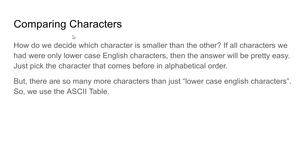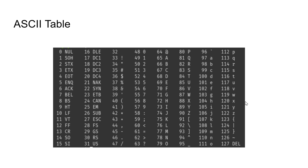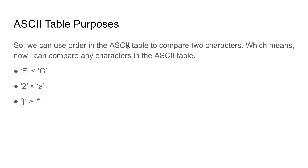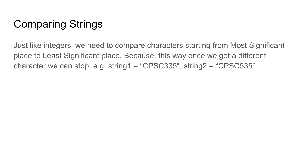Comparing characters: how do we decide which characters are smaller than the other? If all characters we know are lowercase, then we pick the character that comes before the other in alphabetical order. We use the ASCII table — we can use the order in the ASCII table to compare two characters, which means we can compare any character. Just like integers, we need to compare strings starting with the most significant place to the least significant place.